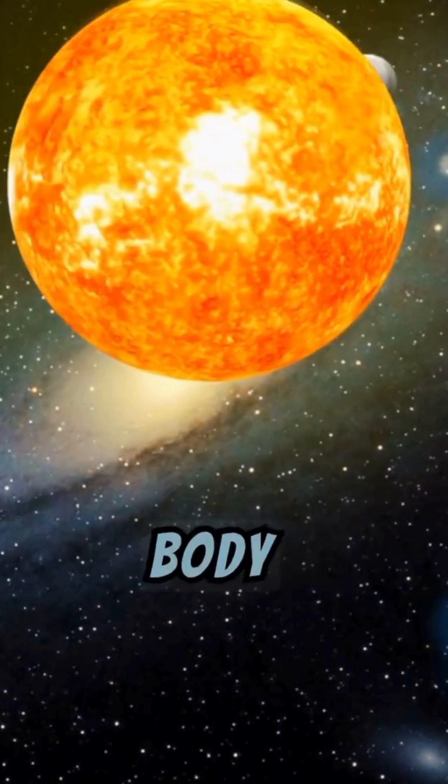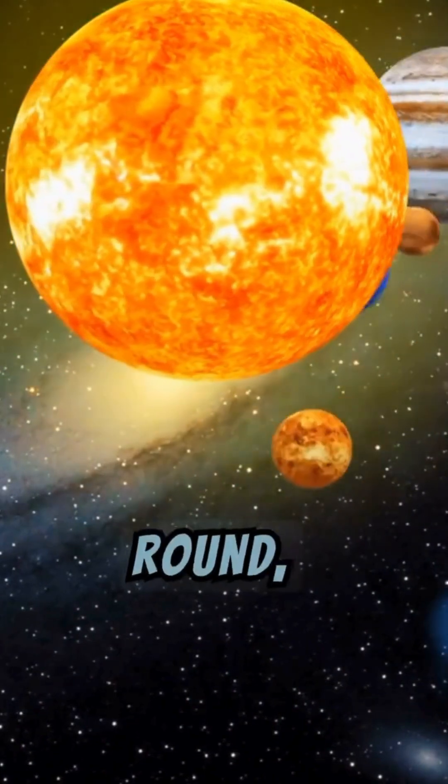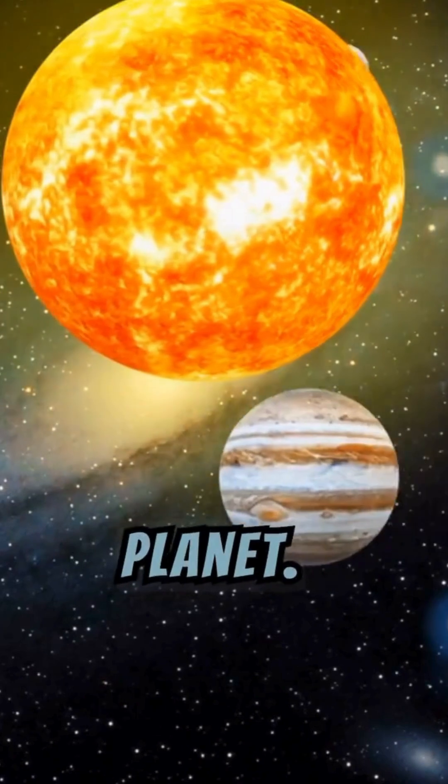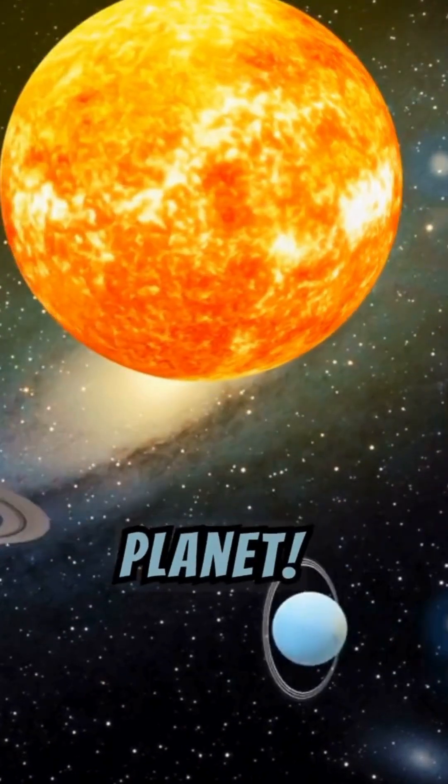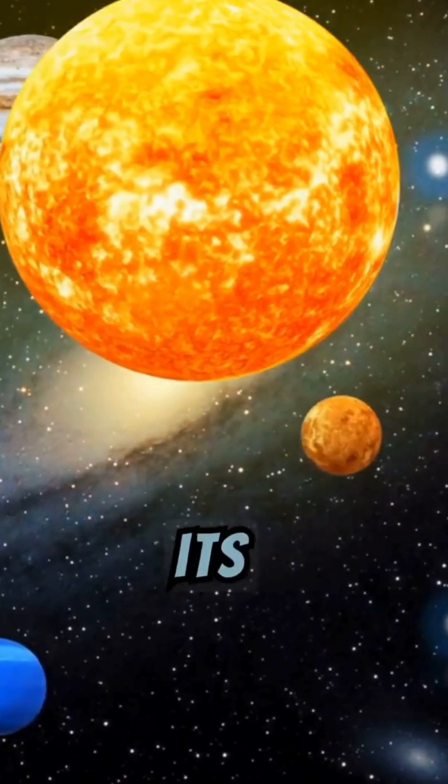Imagine a celestial body that orbits the Sun and is nearly round, but doesn't quite fit the mold of a traditional planet. That's a dwarf planet. It's like a star that didn't quite finish its homework.